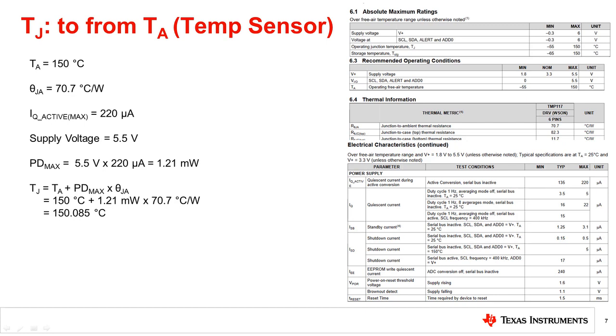As can be seen, even with all parameters in the recommended operating range, the junction temperature exceeds the absolute maximum rating and may lead to irrecoverable damage to the device.